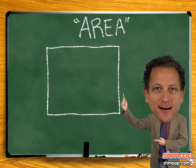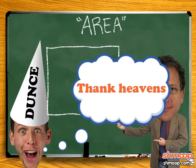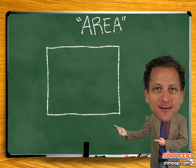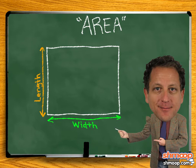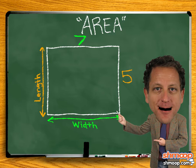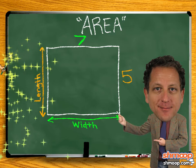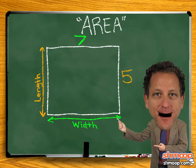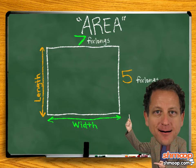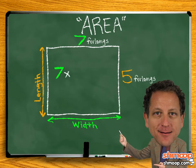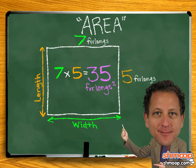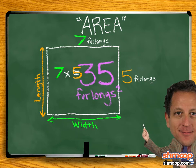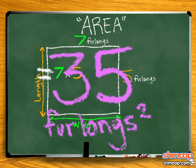The calculation for area is very simple — you just multiply the length by the width. In this case, we multiply 7 times 5. The type of unit we're using is actually irrelevant to the calculation, but since you desperately want us to commit, we'll use furlongs. 7 furlongs times 5 furlongs equals an area of 35 square furlongs. And there we have our area. That's all there is to it.